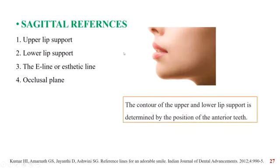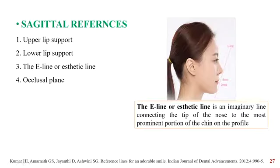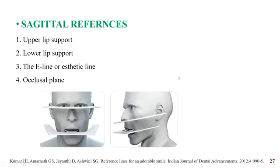Coming on to the sagittal references, these include the upper and lower lip support, the aesthetic line, and the ocular plane. The contour of the upper and lower lip helps in determining the position of the anterior teeth. The aesthetic line is an imaginary line connecting the tip of the nose to the most prominent part of the chin. In an ideal case scenario, the maxillary lip is 4 mm behind the aesthetic line, whereas the mandibular lip is 2 mm behind the aesthetic line. The ocular plane should also be analyzed and should be parallel to the interpupillary line.